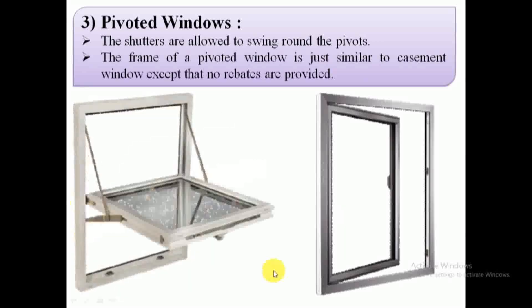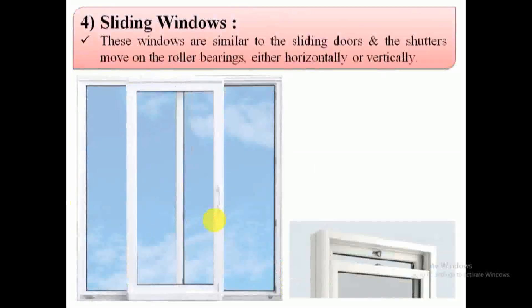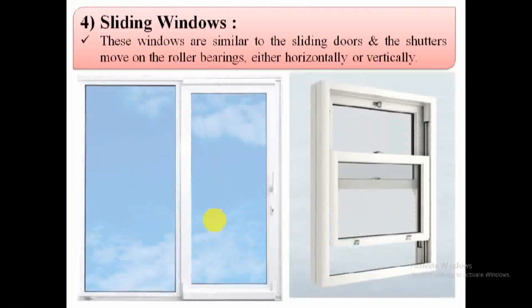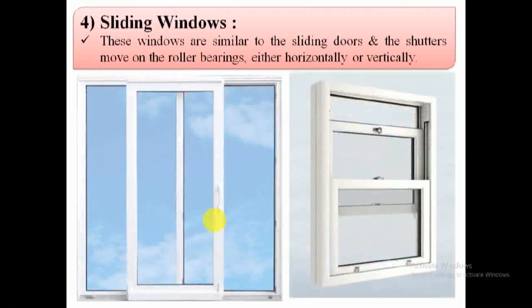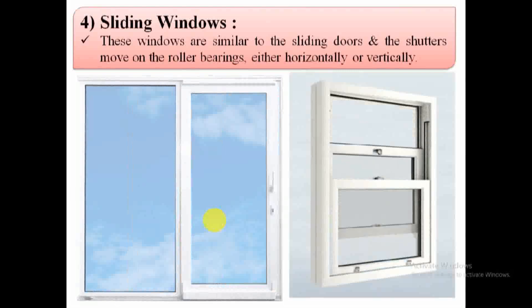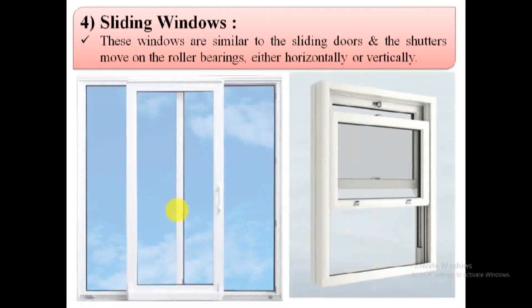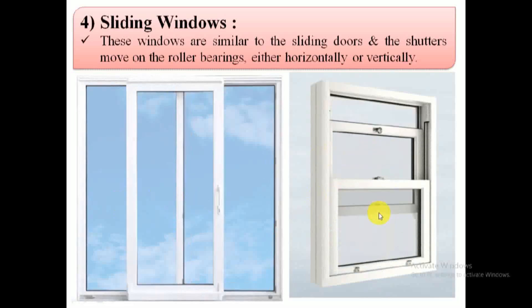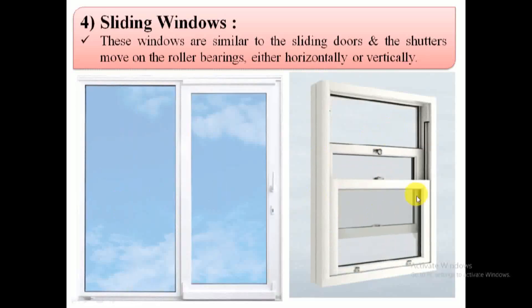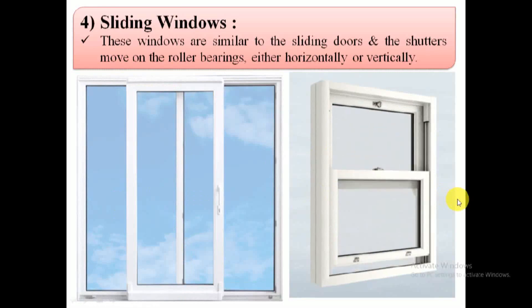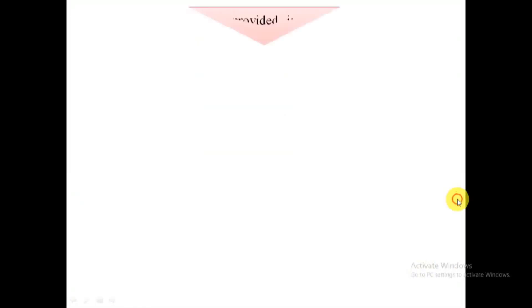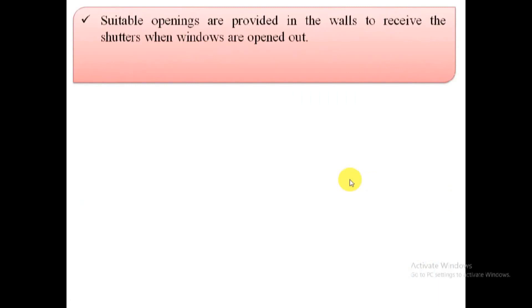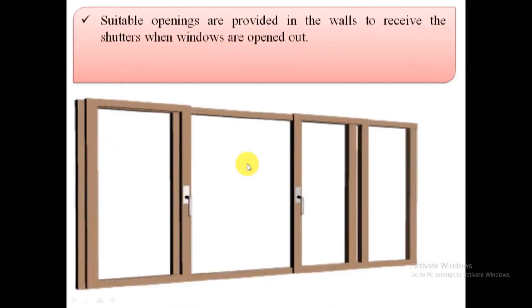4. Sliding windows. They are similar to sliding doors. The shutters move either horizontally or vertically on small roller bearings. Suitable grooves are left in the frame or walls to accommodate the shutters when they are slid to open the window. Such windows are commonly used in trains, buses, shops, banks, etc.